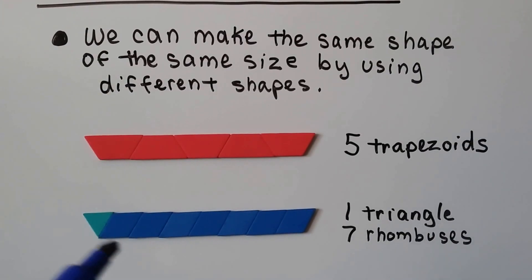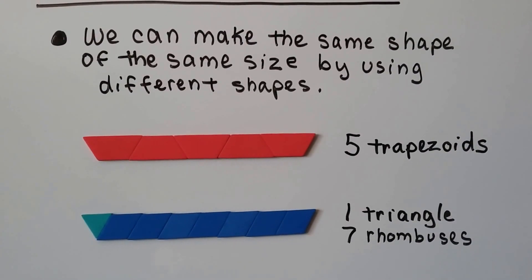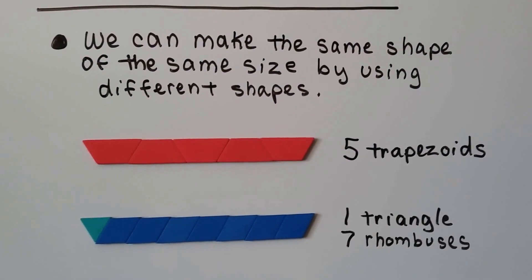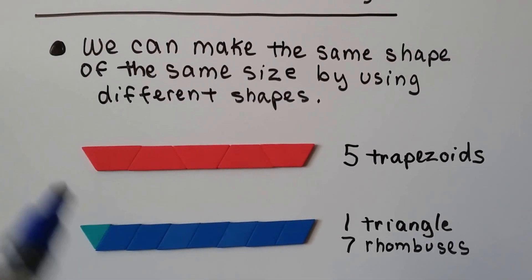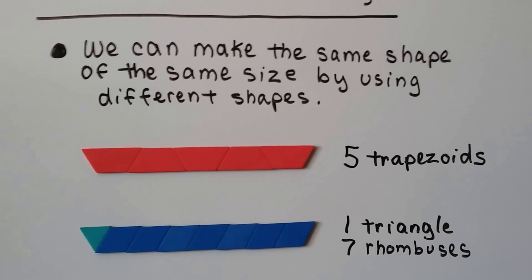And I used one triangle and seven rhombuses and made the exact same shape and same size. See? They have the same outline. I just used different shapes.